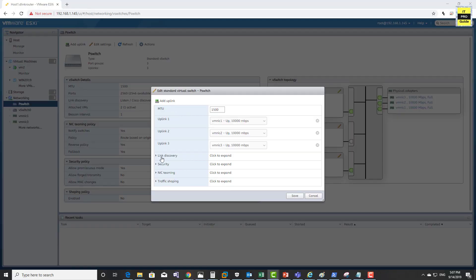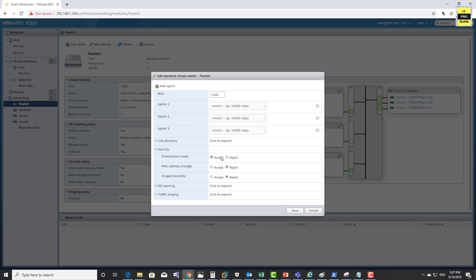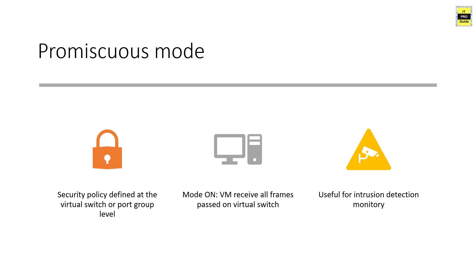Next is the security policy. When you expand the security tab, you see promiscuous mode, MAC address changes, and forged transmit. Promiscuous mode is a security policy you can define at the virtual switch level or at the port group level. By default, the virtual network adapter receives only frames that are meant for it. When you enable promiscuous mode, the guest network adapter receives all frames passed on the virtual switch that are allowed under the VLAN policy. This can be useful for intrusion detection monitoring or if a sniffer needs to analyze all traffic on a network segment.